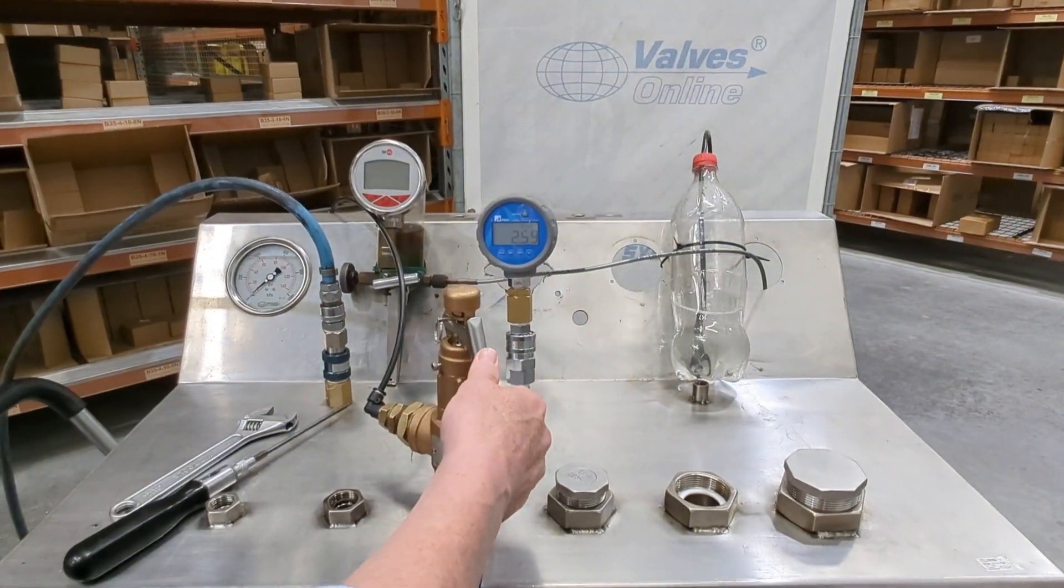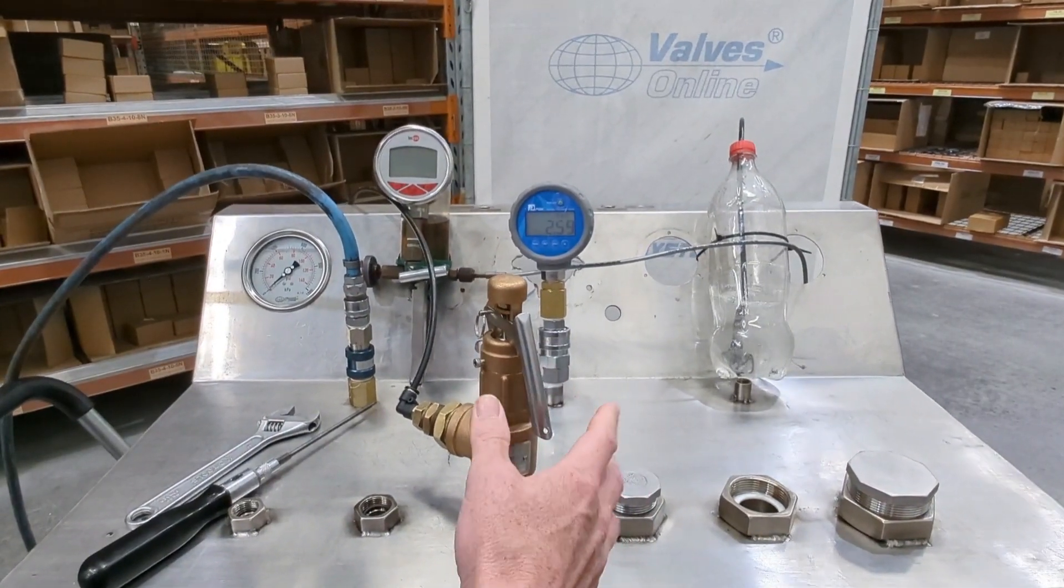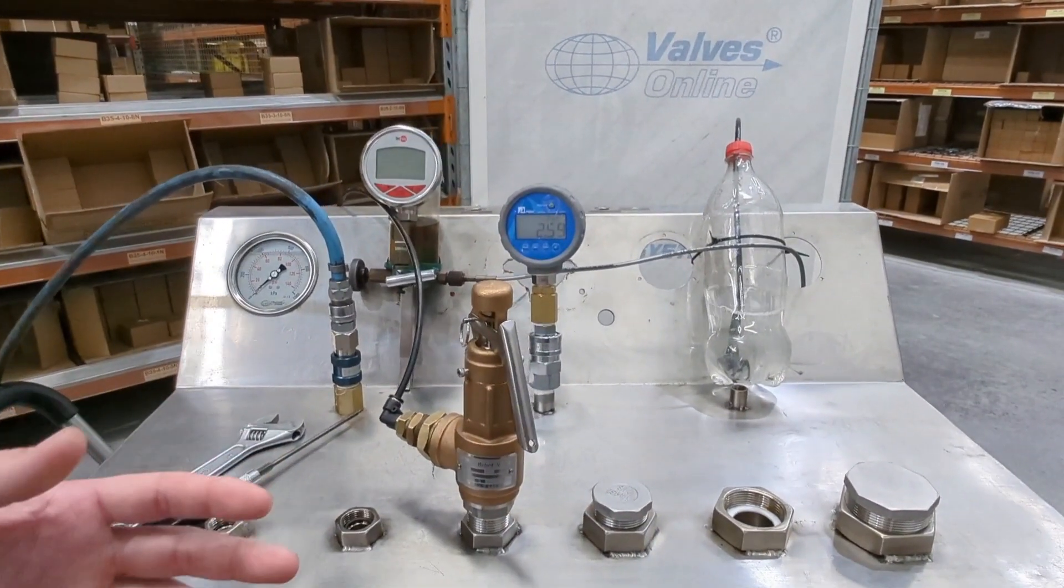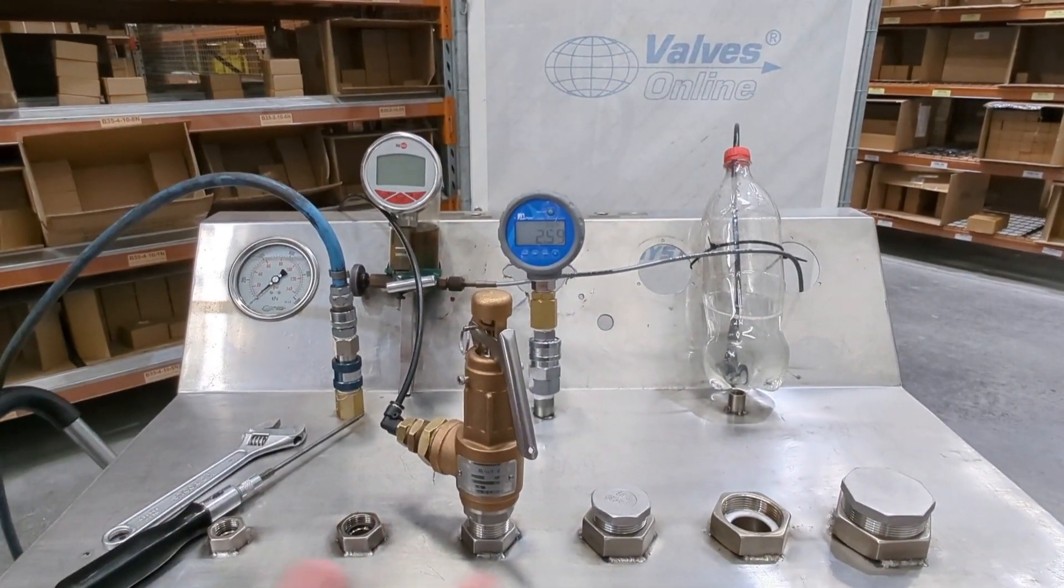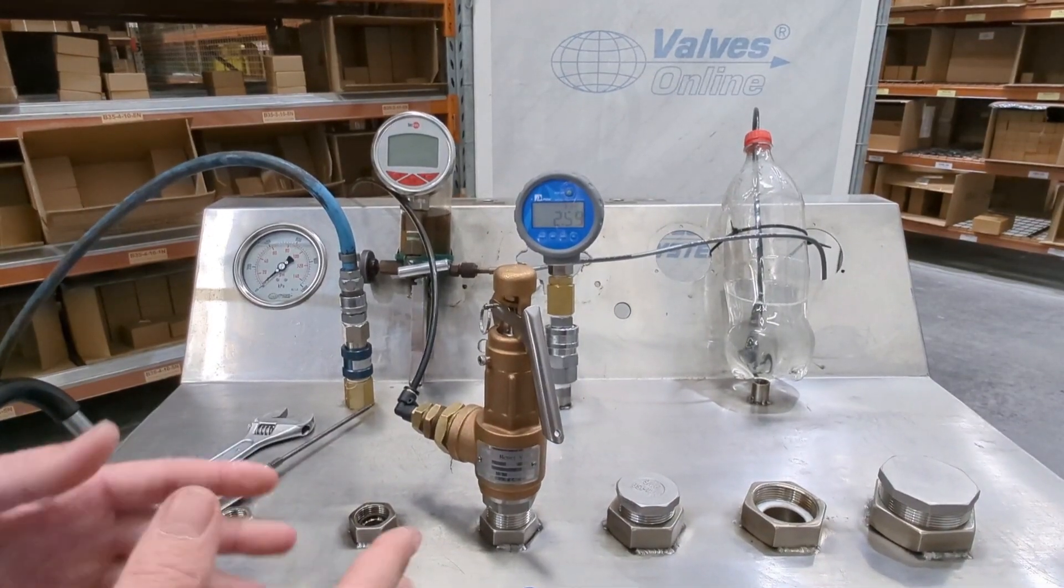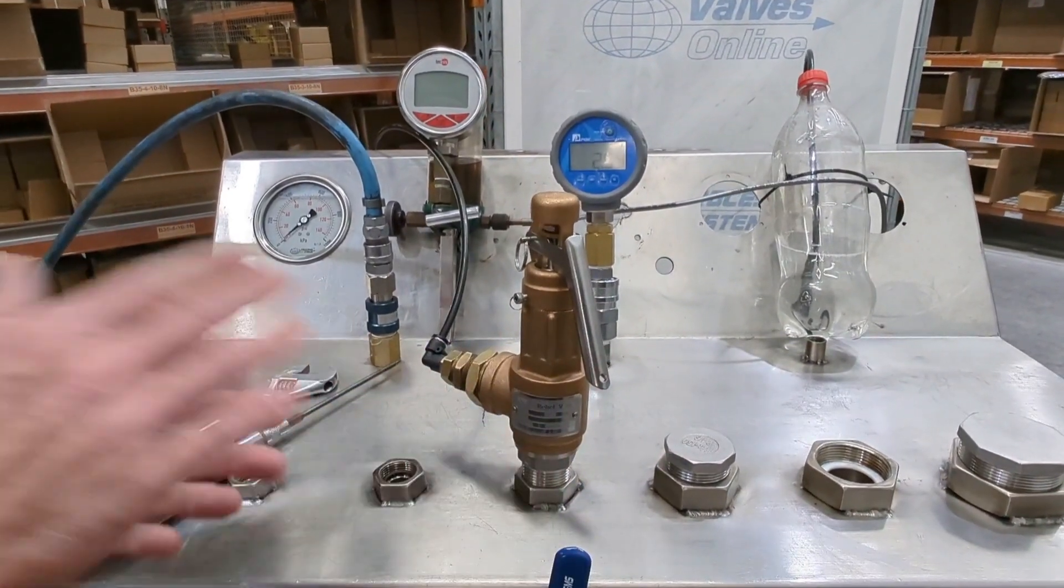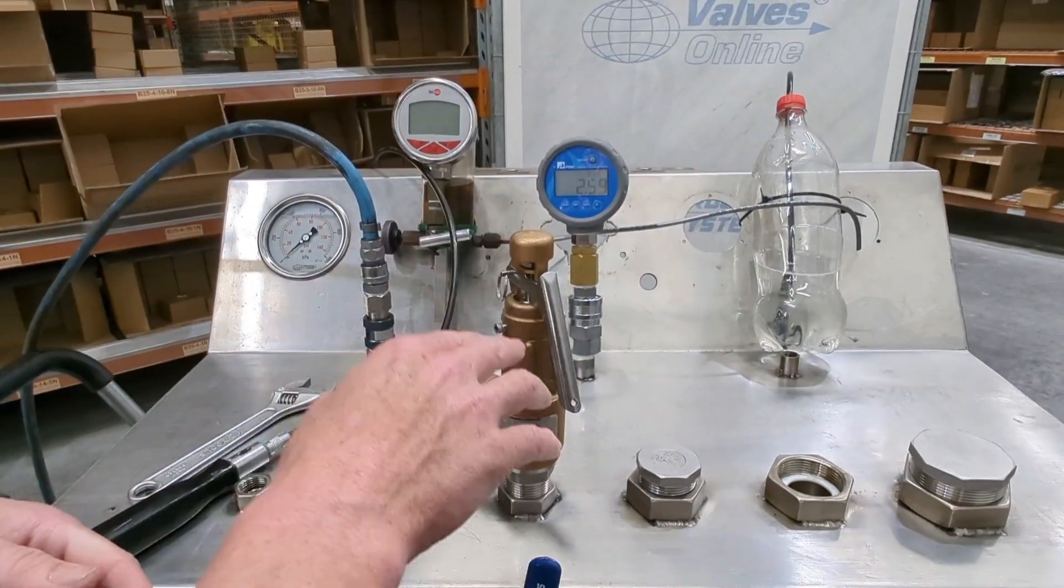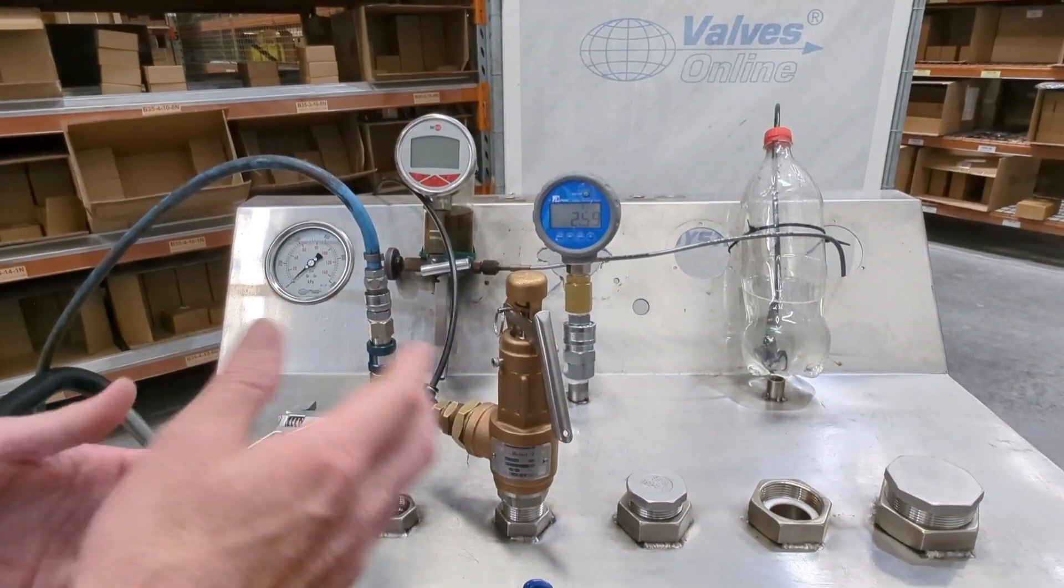Now when you buy this, it may not be set if you haven't required setting or you have ordered a setting. The spring range has a pressure range—for instance, this one is 2 to 5 bar. Within the spring range, what that means is this can be set at its relief point anywhere between 2 and 5 bar. So what you need to do is set it.